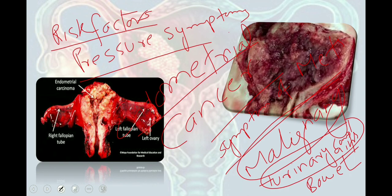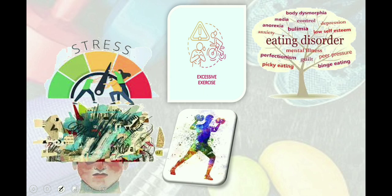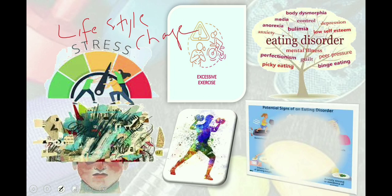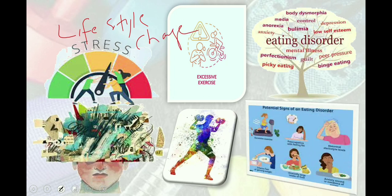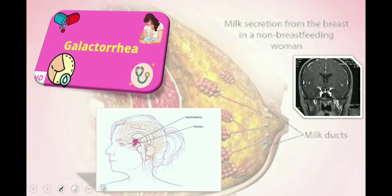Certain lifestyle modifications and changes can bring about abnormal uterine bleeding, so we have to ask about any history of eating disorders, stress, and excessive exercise. There is also a known relationship between hyperprolactinemia and reproductive disorders, amenorrhea, and irregular bleeding, so ask about galactorrhea — milky discharge from the breast in the non-lactational period.